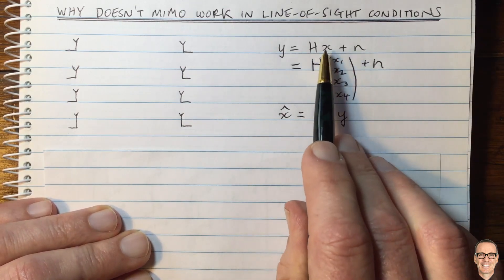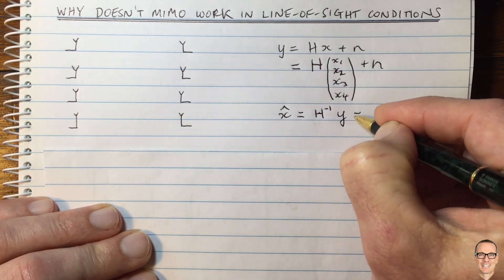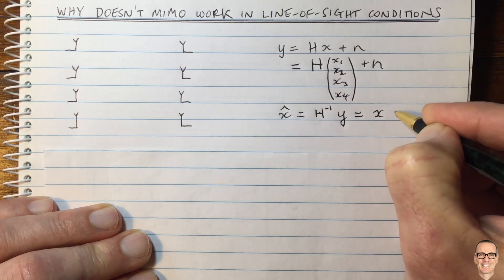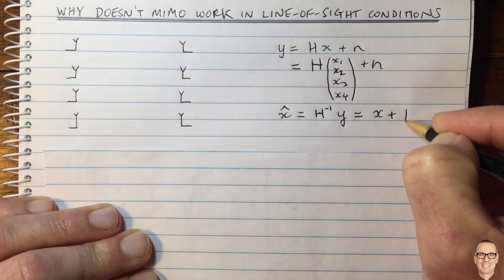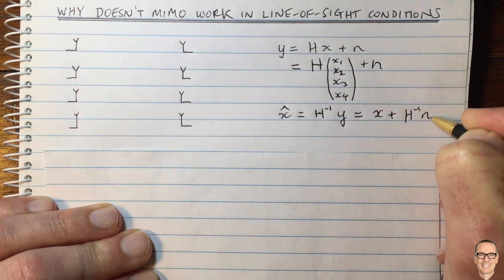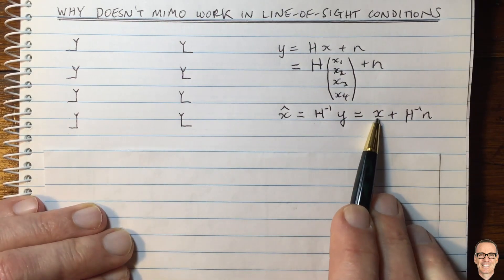and then you would be able to recover the value of X plus a term from the noise. You'd have H inverse times noise. But you've got an estimate of the data.